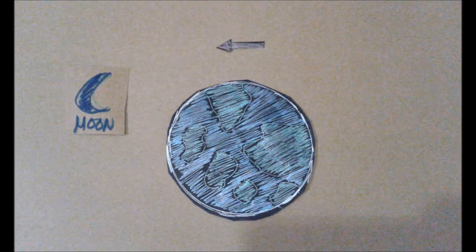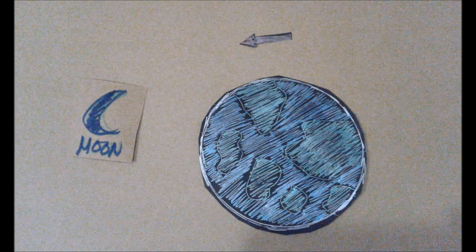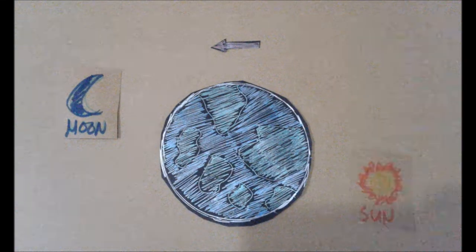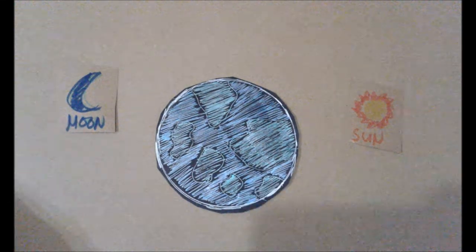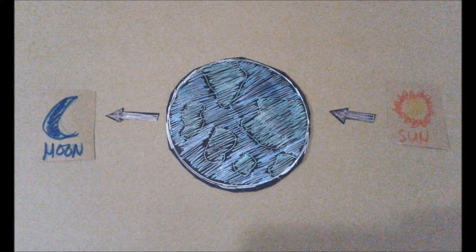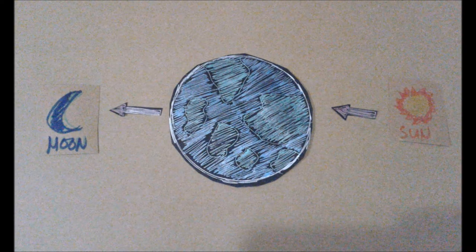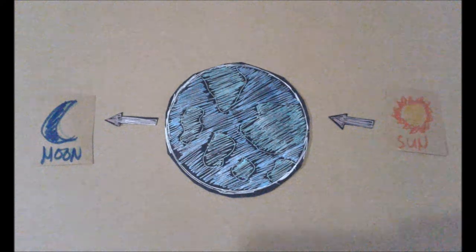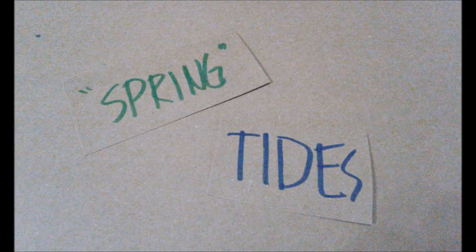These bulges rotate around the Earth as the moon does. The sun's effect is less powerful, but when the sun, moon, and Earth are all aligned at the full and new moons, the combined effect results in the high spring tides.